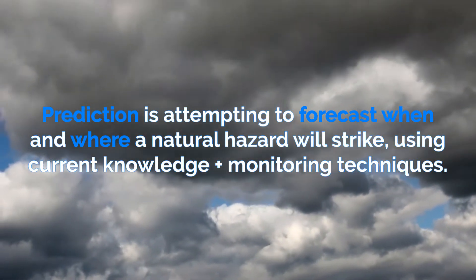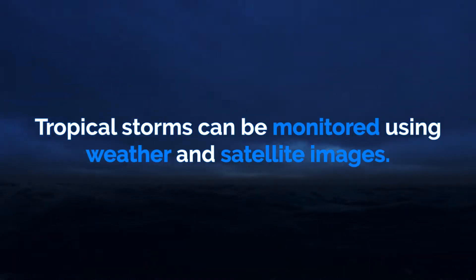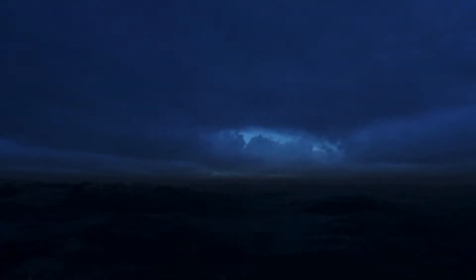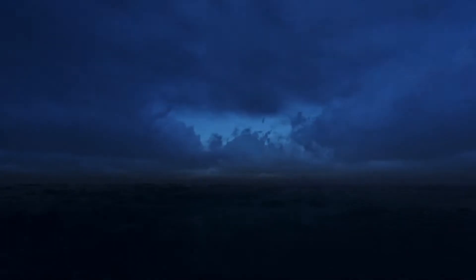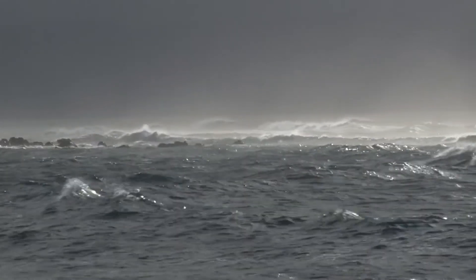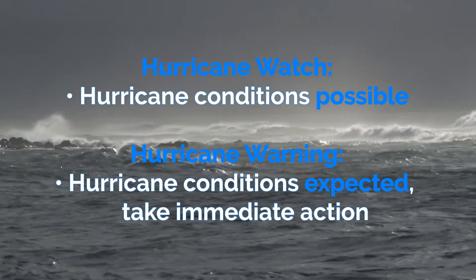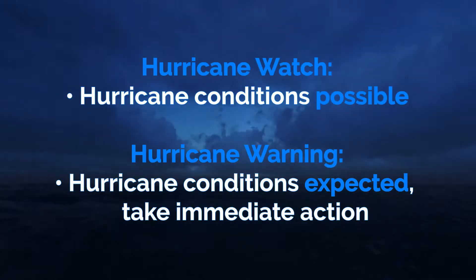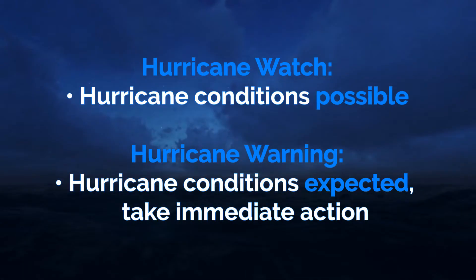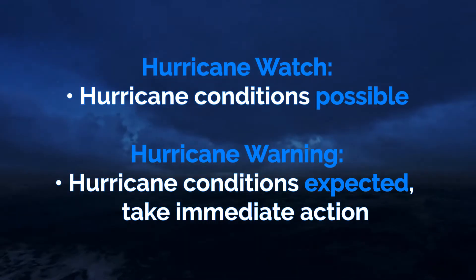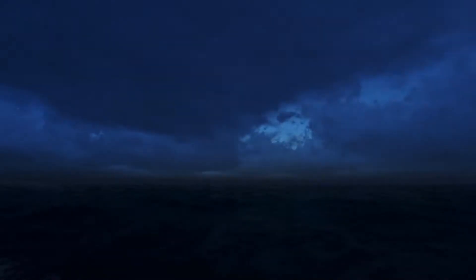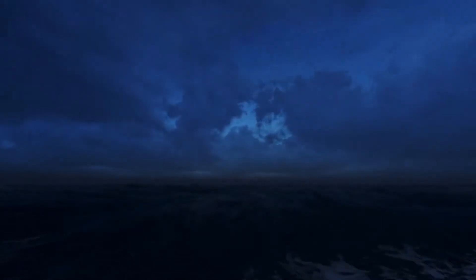Prediction is attempting to forecast when and where a natural hazard will strike, and is done using current knowledge and monitoring techniques. Tropical storms can be monitored using weather and satellite images. In the North Atlantic there are two levels of warnings issued by the National Hurricane Center in Miami: Hurricane Watch, which advises that hurricane conditions are possible, and Hurricane Warning, which advises that hurricane conditions are expected and that people should take immediate action such as evacuating to high ground or taking shelter.